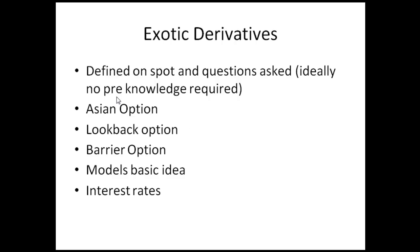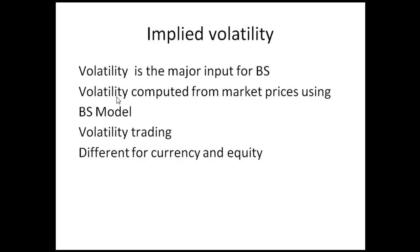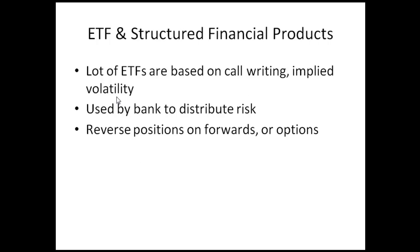Then there are some exotic derivatives: the Asian option, the lookback option, and the barrier option. An Asian option generally takes an average of prices; a lookback option looks at some high or low price. These will be defined in context if they are asked, so just don't be afraid of them. Implied volatility is computed using market prices via the Black-Scholes model, and you can have volatility trading and implied volatility for both currency and equity.